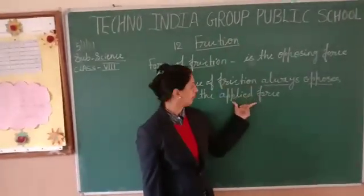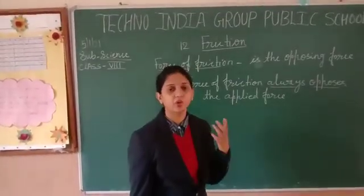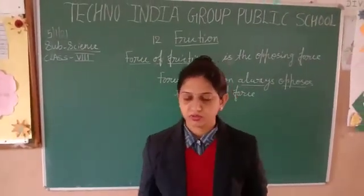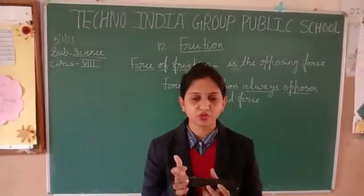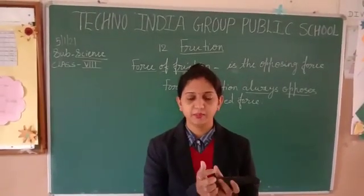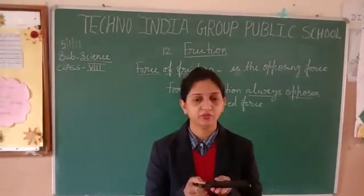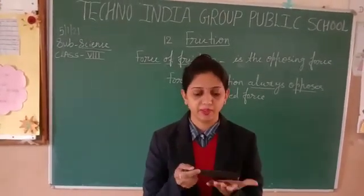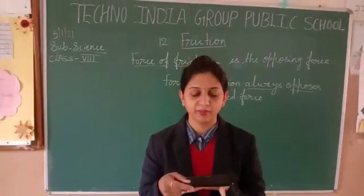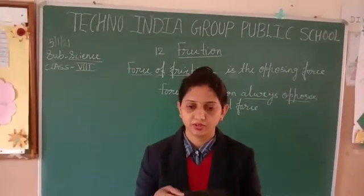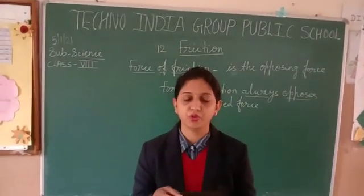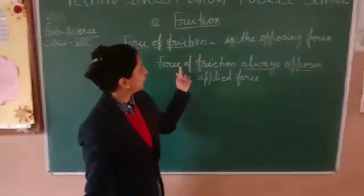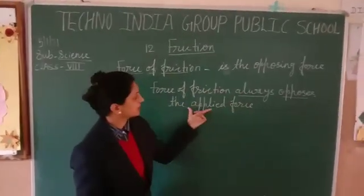Force of friction always opposes the applied force. Suppose we have taken some object — when we apply force on it, it moves in the forward direction, but at the same time, the surface on which we have kept that object applies force in the opposite direction. Force of friction always opposes the applied force.